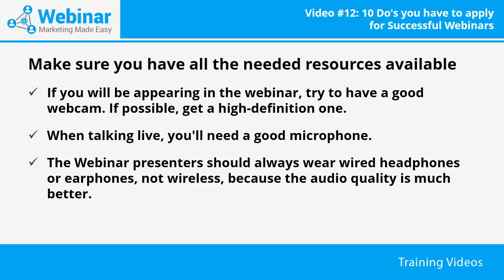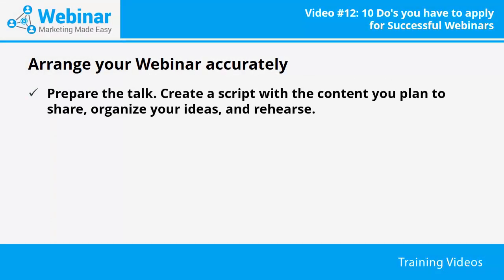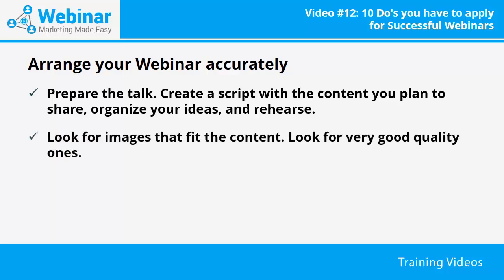Your audience will thank you by staying engaged. For this reason, you must have good quality equipment. Arrange your webinar accurately — prepare the talk, create a script with the content you plan to share, organize your ideas and rehearse. Many people improvise and produce really painful webinars in which the speaker is silent, looking for new things to say, or simply contradicts himself. Look for images that fit the content — very good quality ones. Plan what you are going to show, and consider having breaks so you will not stray from your timeline. Keep time during the welcoming part, presentation, and round of questions.